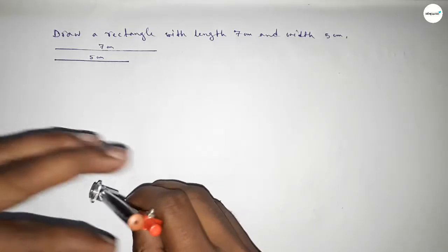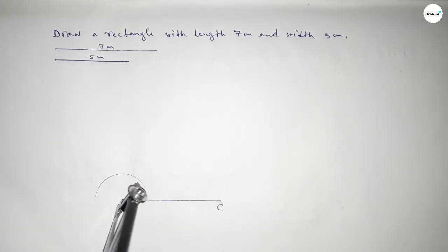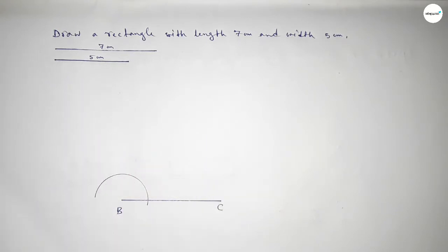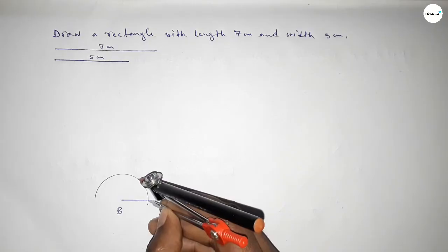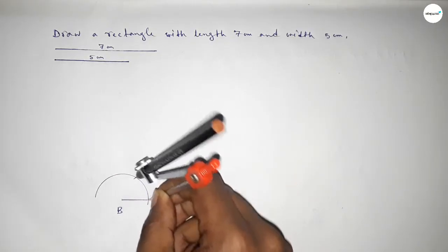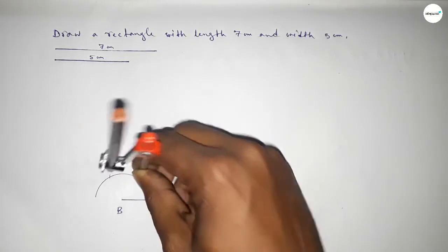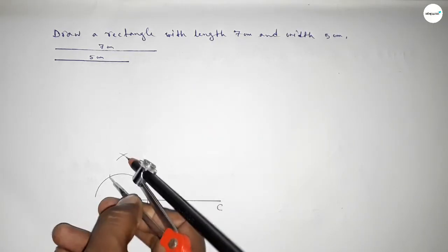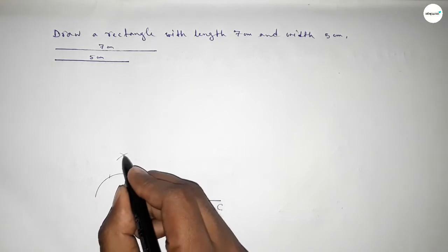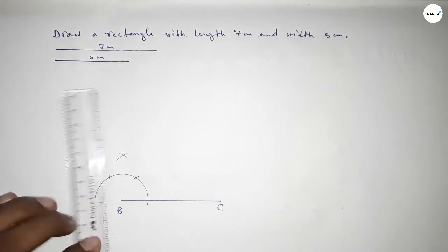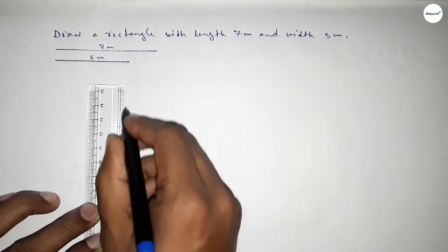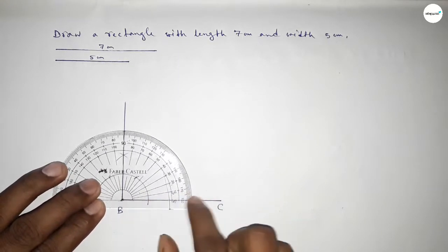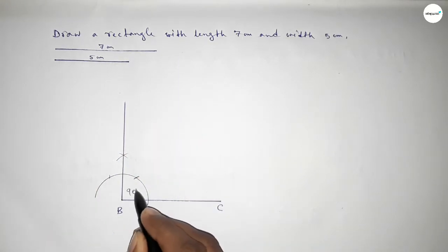Now putting the compass on point B and drawing an arc. We have to draw a 90 degree angle here. Putting the compass on the point and cutting the same length, then putting the compass again and cutting here, drawing an arc with the same length so both curves intersect at a point. Joining this side to get a 90 degree angle — checking — this is perfectly 90 degrees.